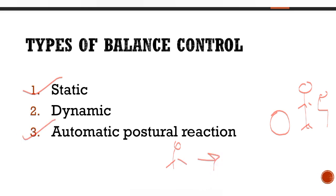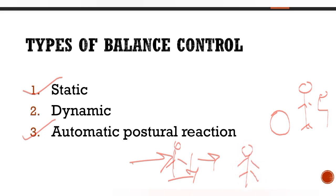The second system is dynamic postural control, which involves running and walking. The third is the autonomic postural reaction, which is an automatic nervous system response to unexpected external forces on the body — for example, when a person is pushed suddenly. How does the body maintain its position in that situation? That is your autonomic postural reaction.